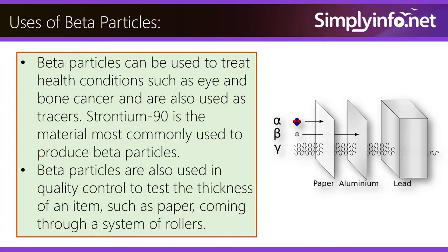Uses of beta particles. Beta particles can be used to treat health conditions such as eye and bone cancer, and also used as tracers. Strontium-90 is the material most commonly used to produce beta particles.